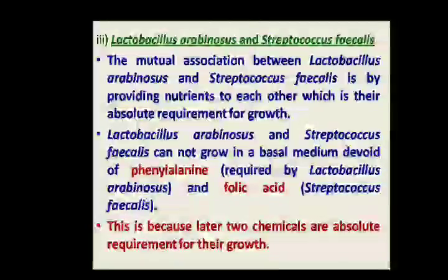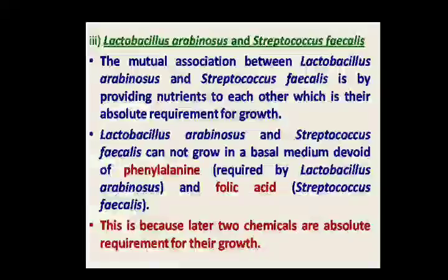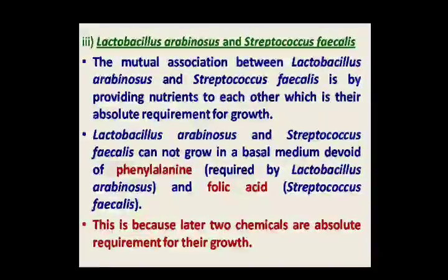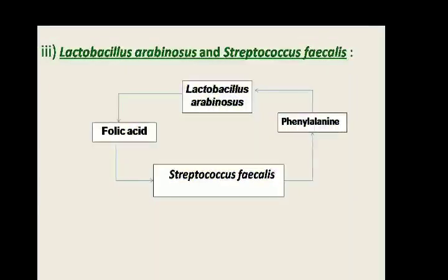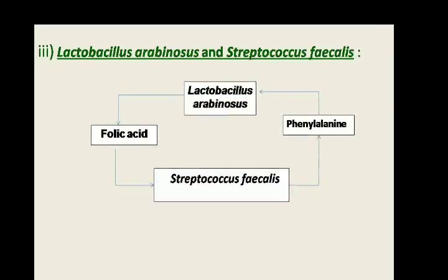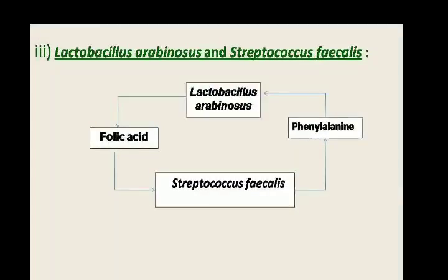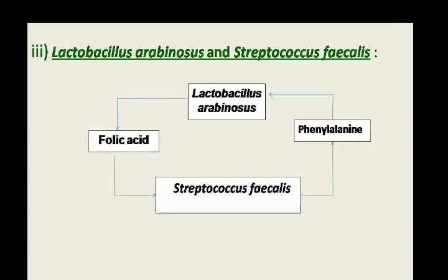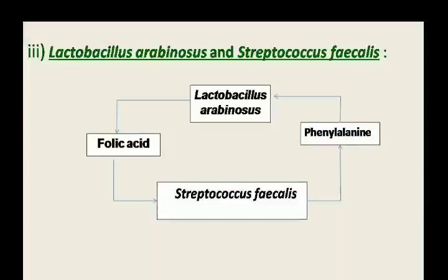The association between Lactobacillus and Streptococcus is the best example of Ecto-Symbiosis, in which both partners depend on each other and live together. In this association, Lactobacillus produces folic acid, which is required for the growth of Streptococcus. At the same time, Streptococcus produces Phenylalanine, which is required for the growth of Lactobacillus. Both partners benefit from each other.